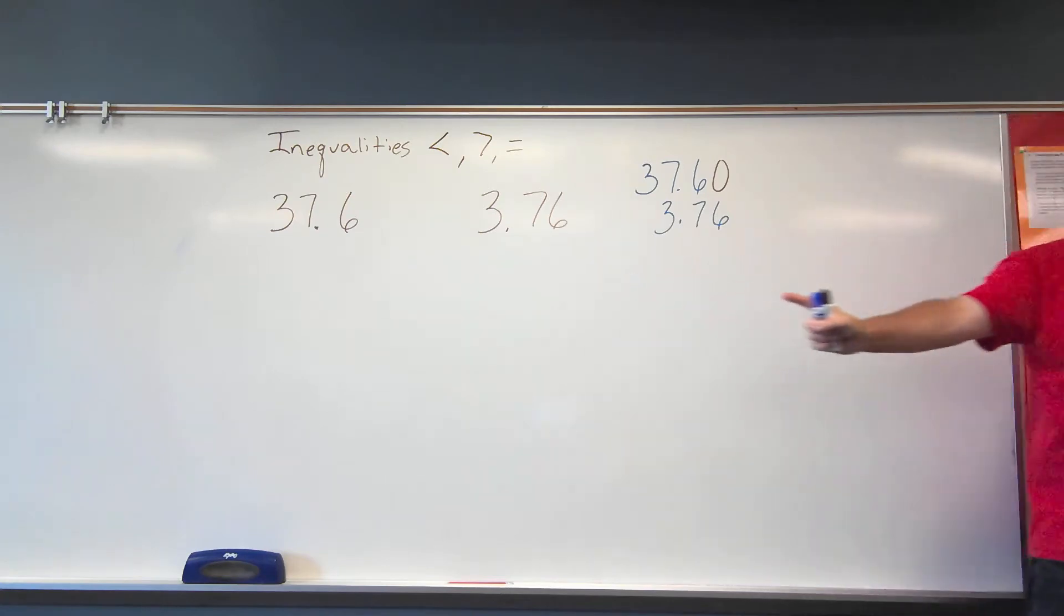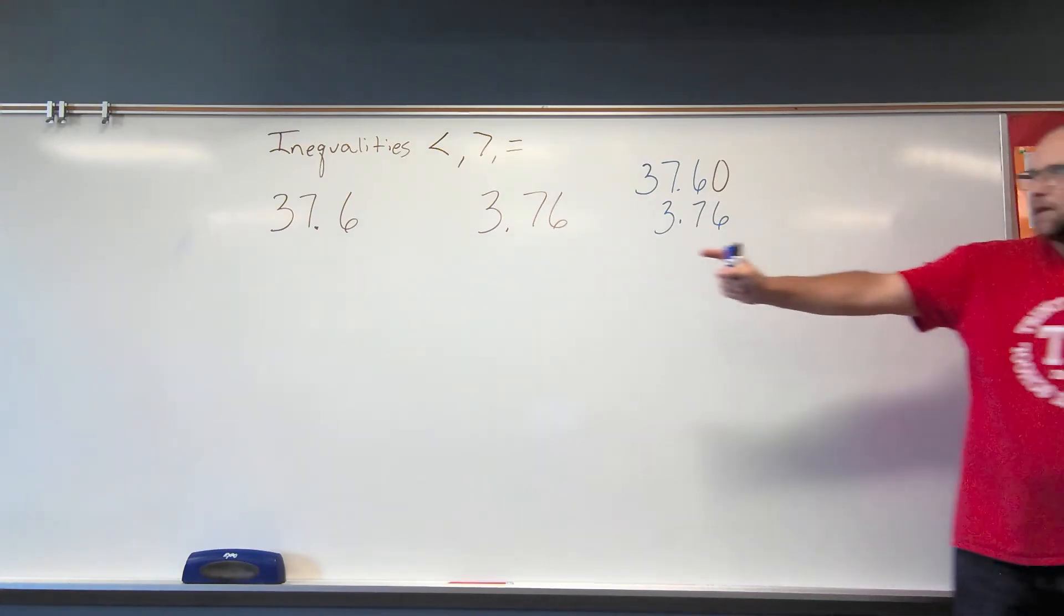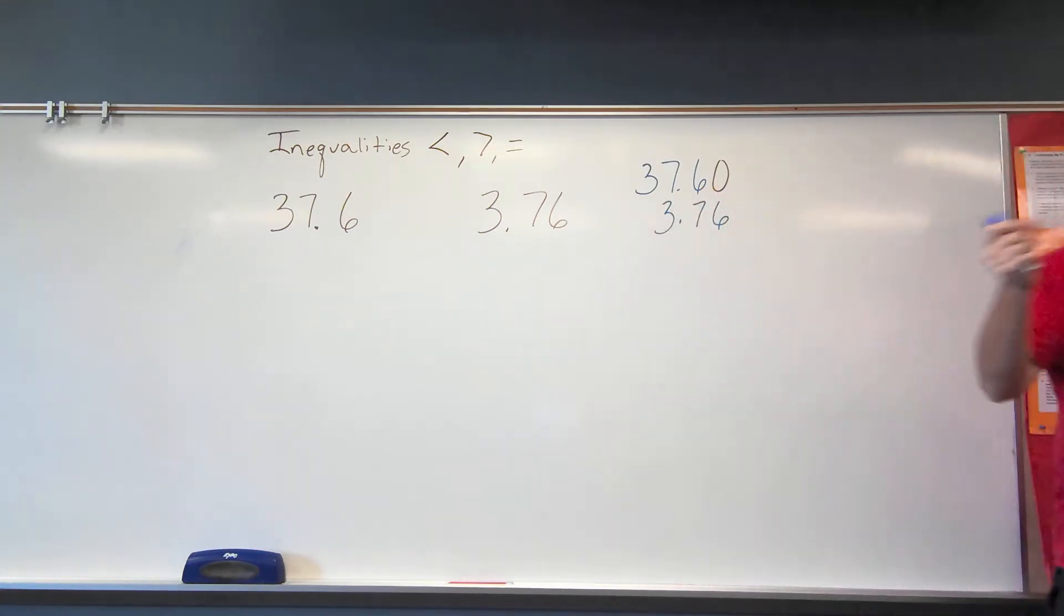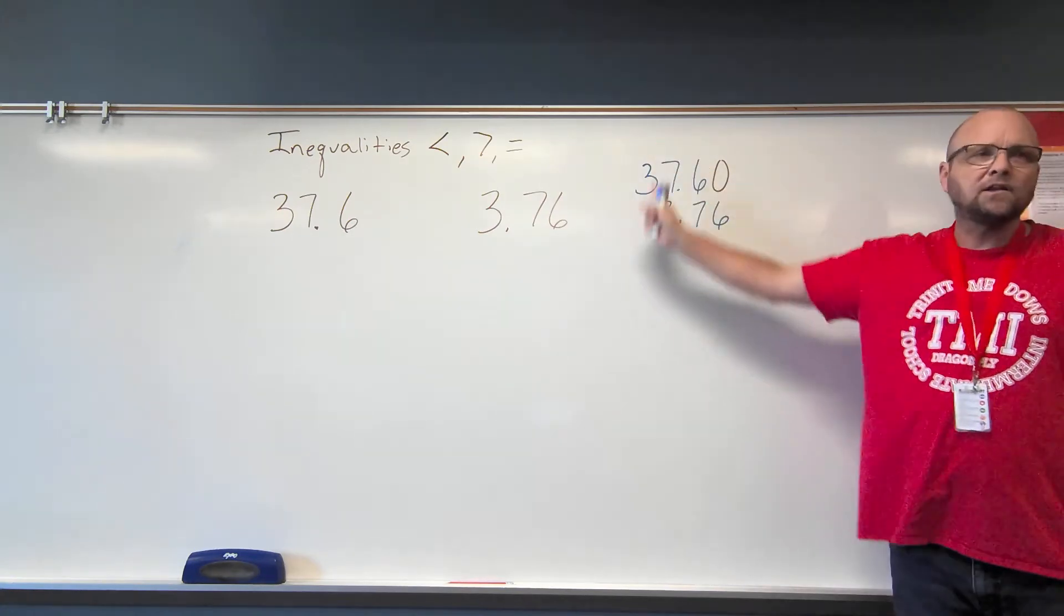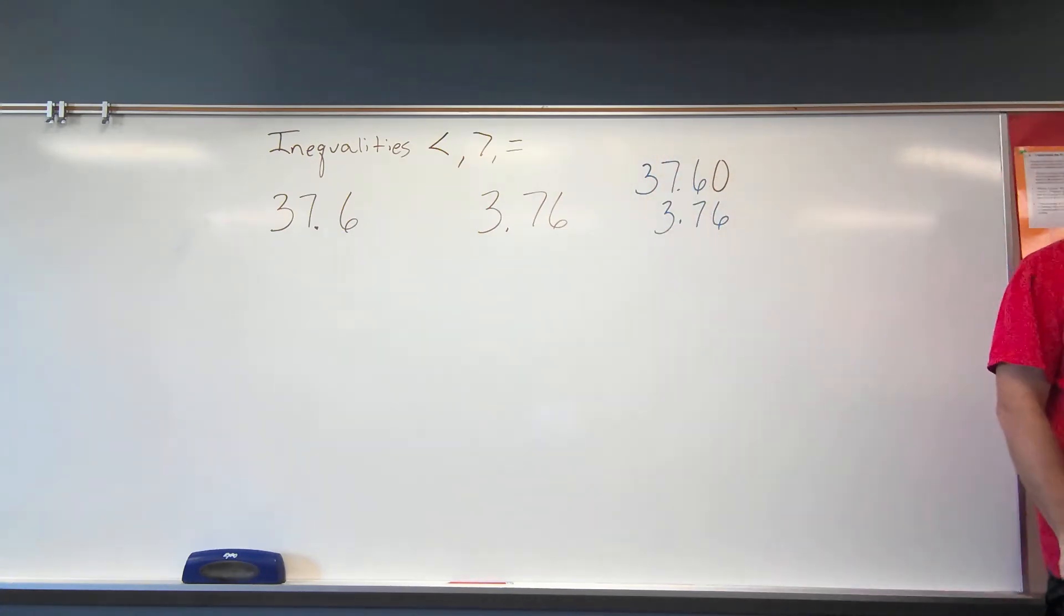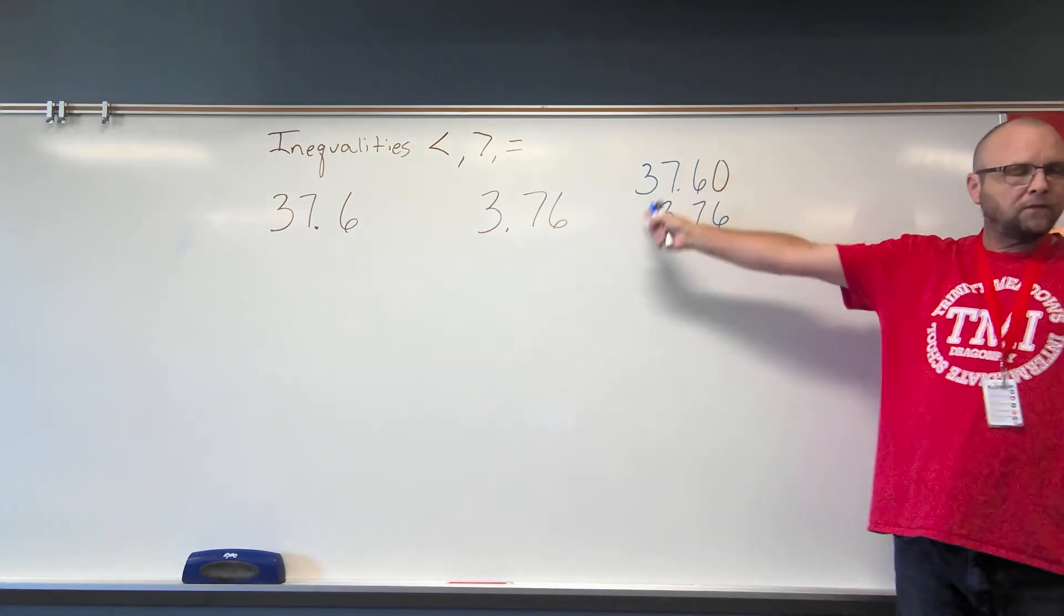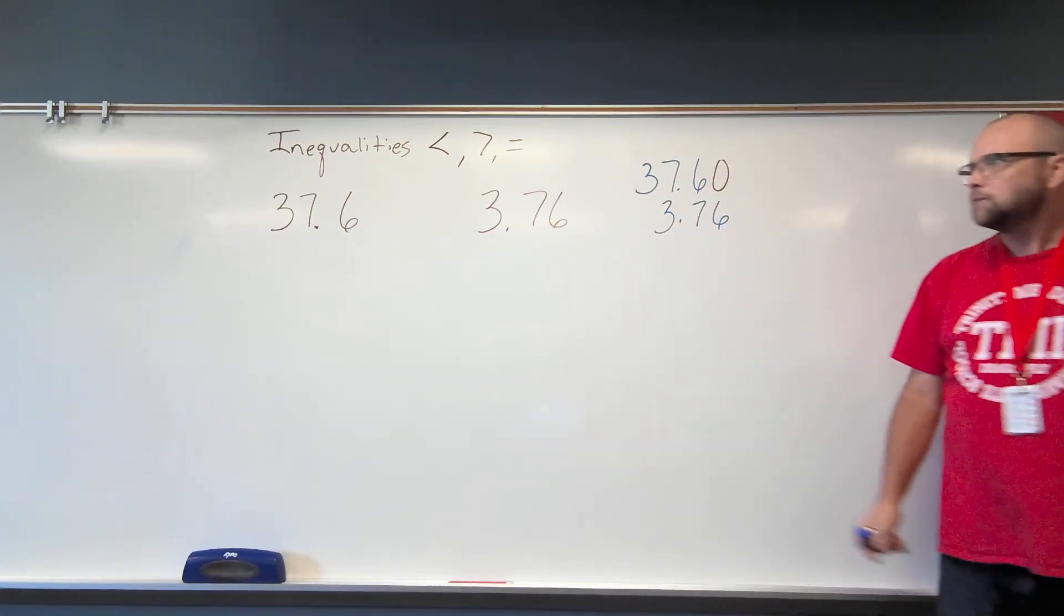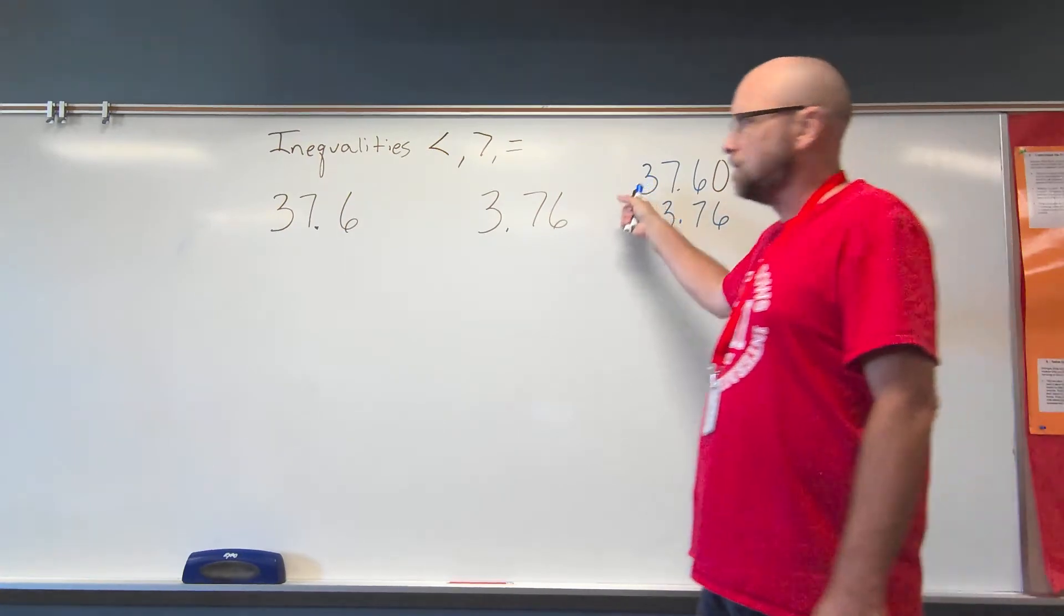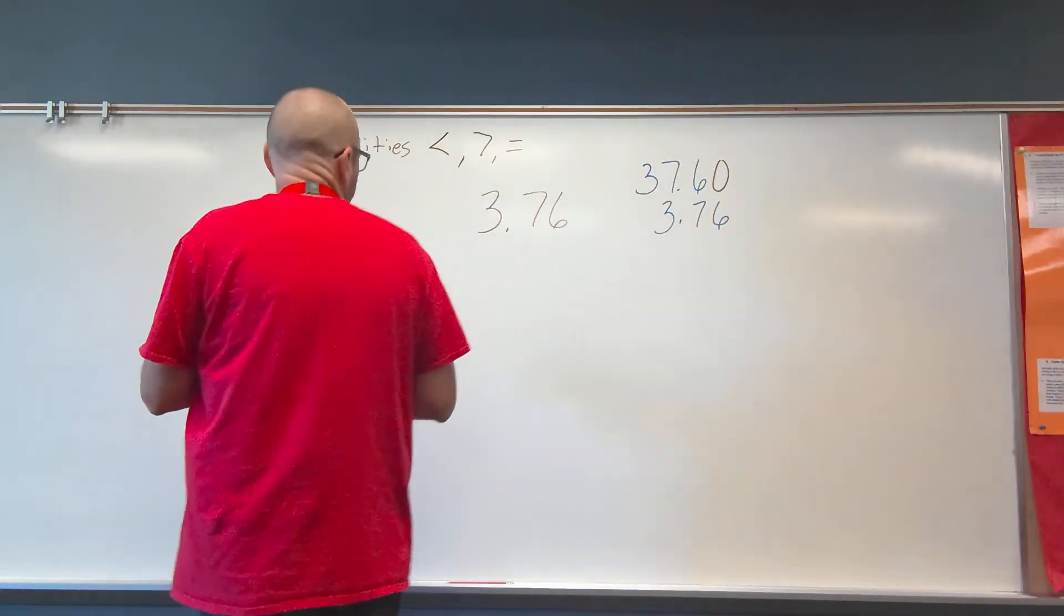Now we start with the biggest place value. The biggest place value is what place? The tens. The tens. Is there a difference in the tens? Yes. One has a number and the other one doesn't. So the one with a 3 in the tens place, therefore, is going to be the larger one.